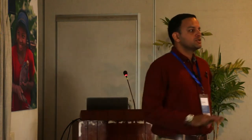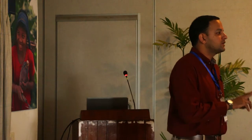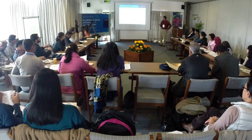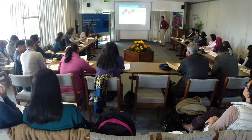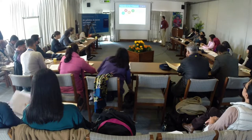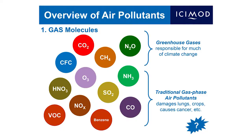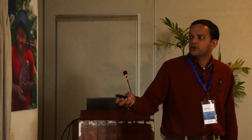Now onto the technical subject matter. If we think about air pollution broadly, there are two categories of air pollutants. The first one is the one we hear about most — gas phase molecules. At the top are the four main greenhouse gases responsible for most of the warming of the atmosphere: carbon dioxide, methane, nitrous oxide, and chlorofluorocarbons.